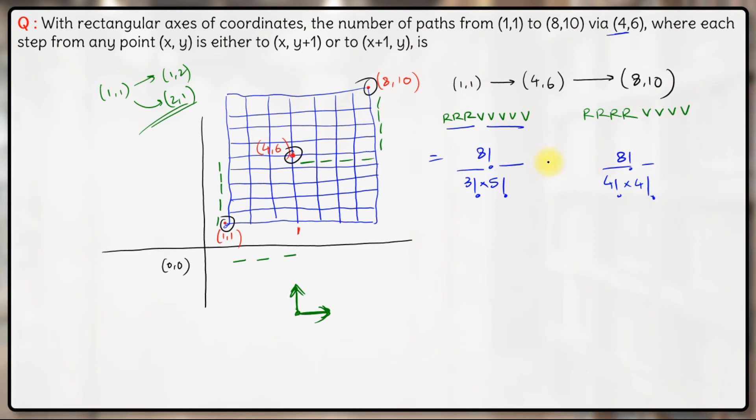So the total number of ways will now become the product of these 2 values here: 8 factorial upon 3 factorial into 5 factorial into 8 factorial upon 4 factorial into 4 factorial over here. So once you simplify this, this will come out to be 3920. 3920 will be your final answer.